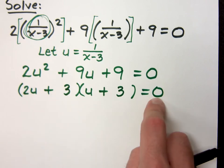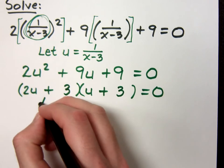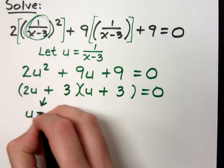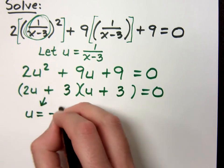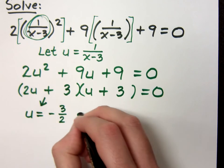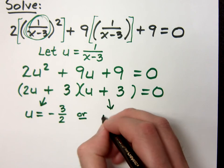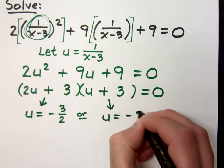Now, this is a nice equation for me to finish solving. So what does u equal? When I solve this for u, u equals negative 3 halves, or this guy gives me u equals negative 3.